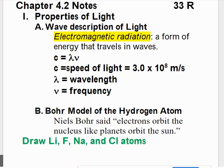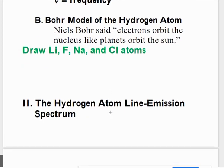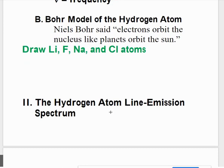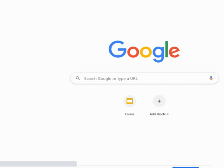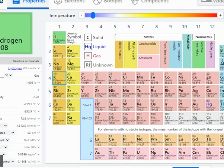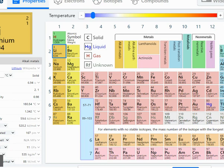We went over the Bohr model of hydrogen in 4.1. We're going to draw the Bohr models of lithium, fluorine, sodium, and chlorine. So we have to look up these elements on the periodic table and figure out how many protons and therefore how many electrons are in each. Lithium has three electrons on the periodic table. Its atomic number is three, therefore it has three protons and three electrons.